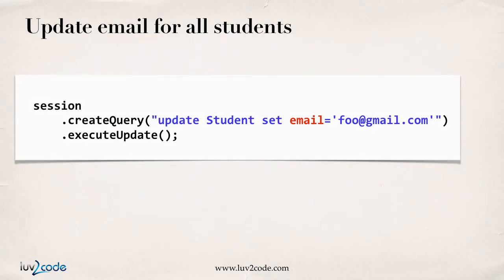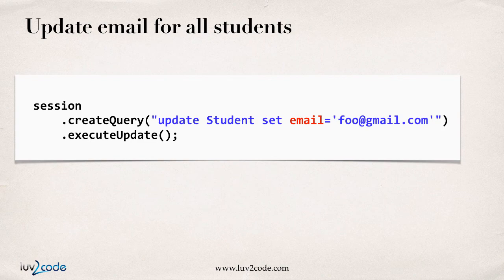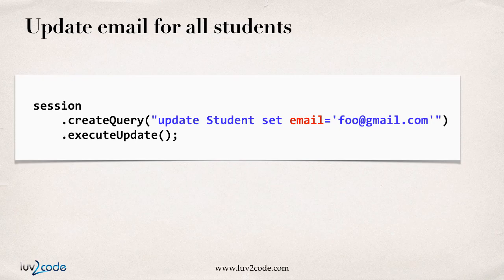That's how we update one student. But what if you wanted to do an update for all of the students? In this example, I'm going to update all the students' email addresses to a given value. I'll say session.createQuery and write "update Student set email = 'foo@gmail.com'", then call .executeUpdate(). This will update all the email addresses to foo@gmail.com. Now, you may not want to set all of the email addresses — you can easily add a WHERE clause, such as WHERE id = 1 or id = 5, or WHERE id is in a certain range. But just to keep it simple, I'm just going to do a blanket update of all the email addresses. So you simply do a createQuery and then an executeUpdate — and that's it.